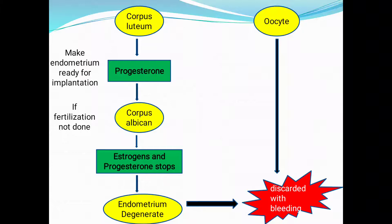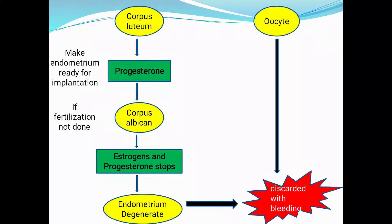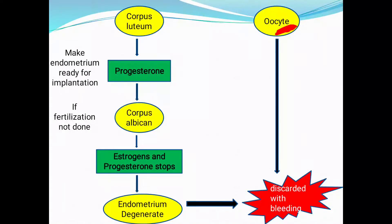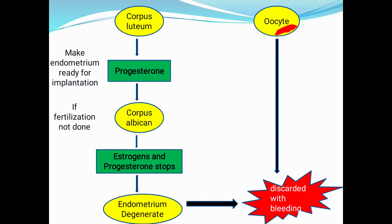The oocyte comes out from the ovary into the oviduct, where it waits for sperm to enter and fertilize it. The oocyte — 'oo' meaning egg, 'cyte' meaning cell — undergoes meiosis in the oviduct and forms four haploid egg cells, also called ovum cells. These ovum cells are ready to be fertilized when sperm arrives.